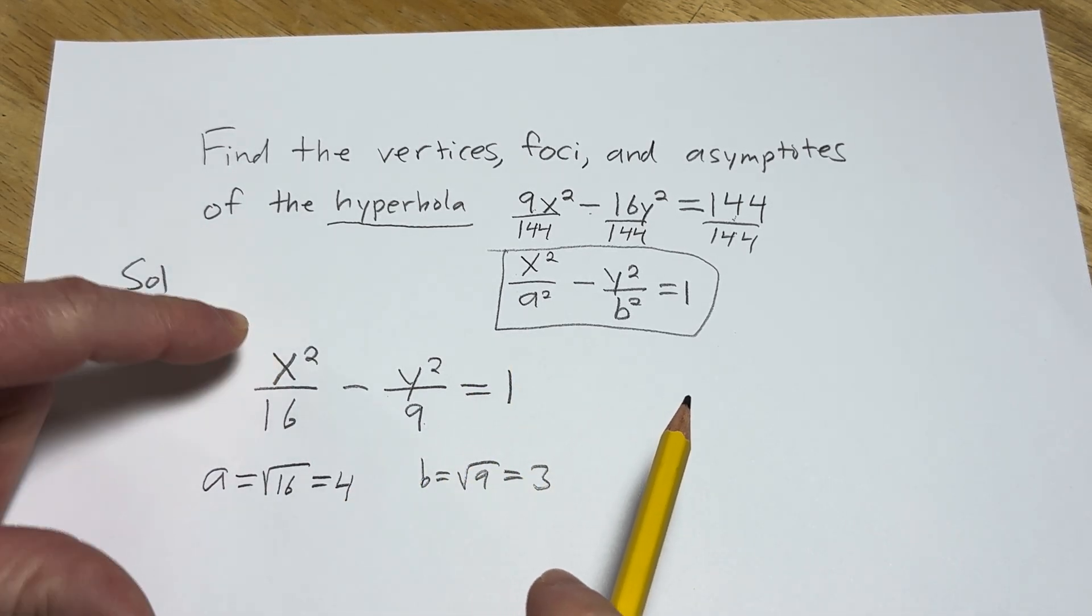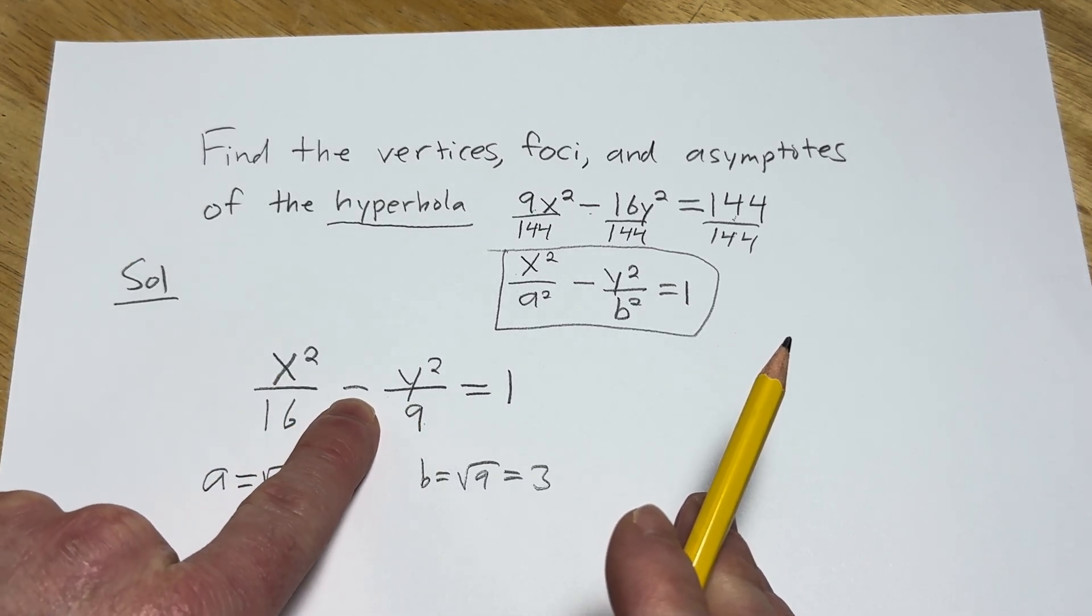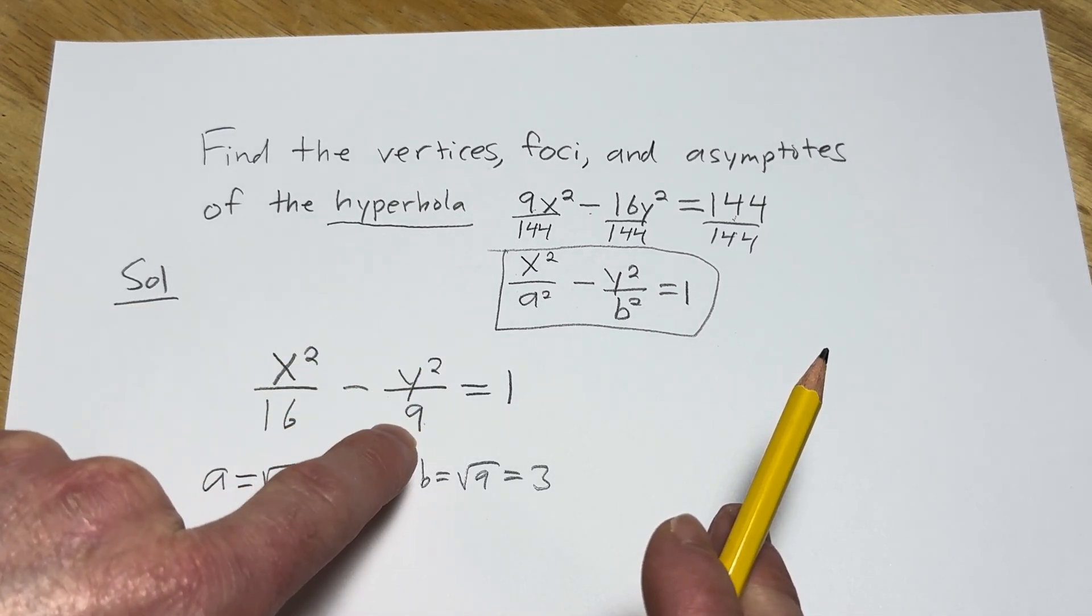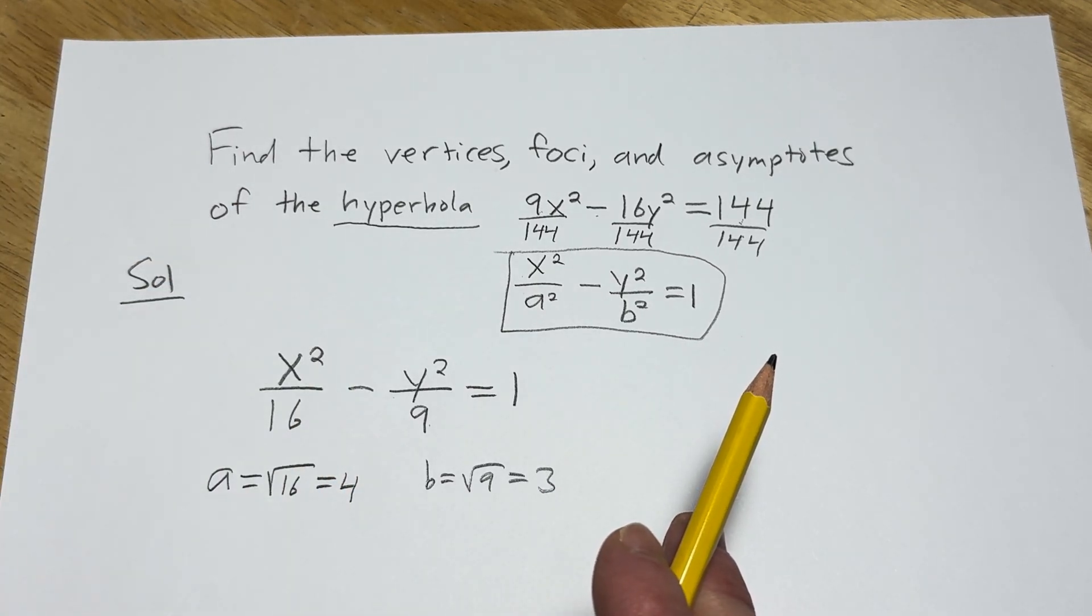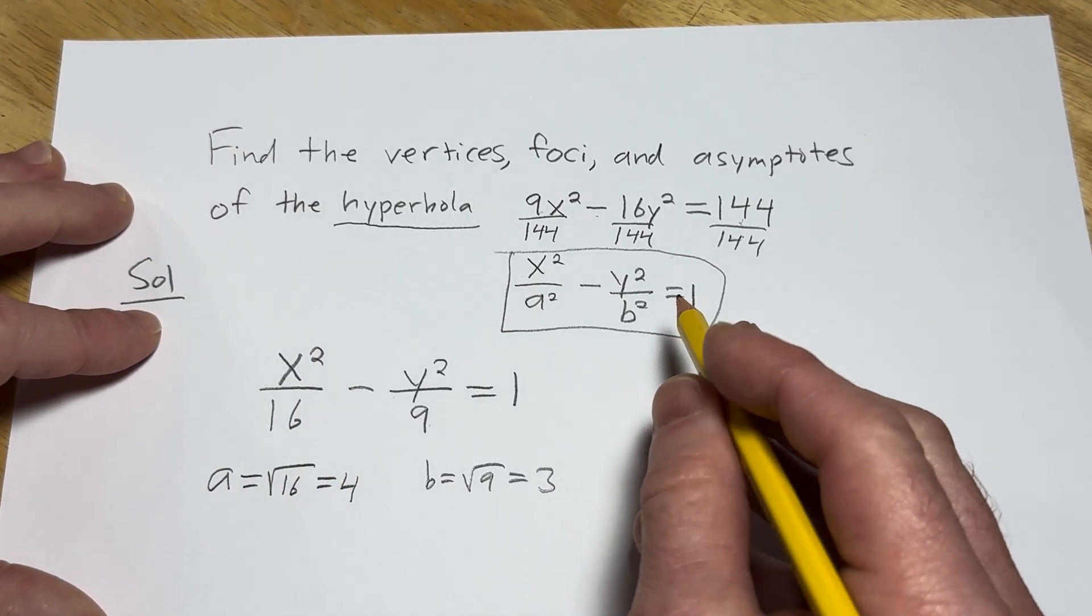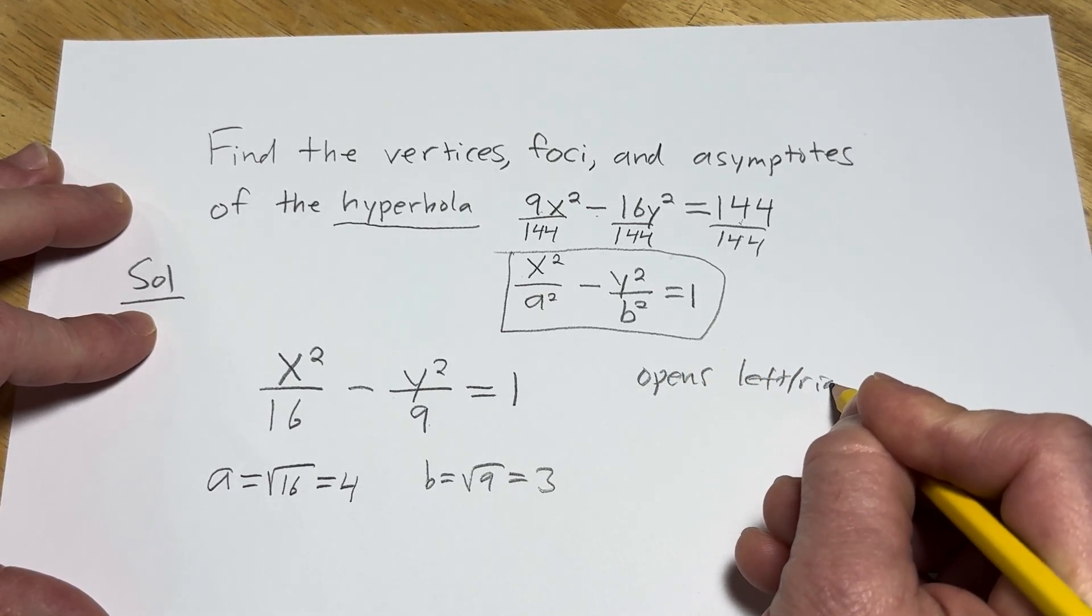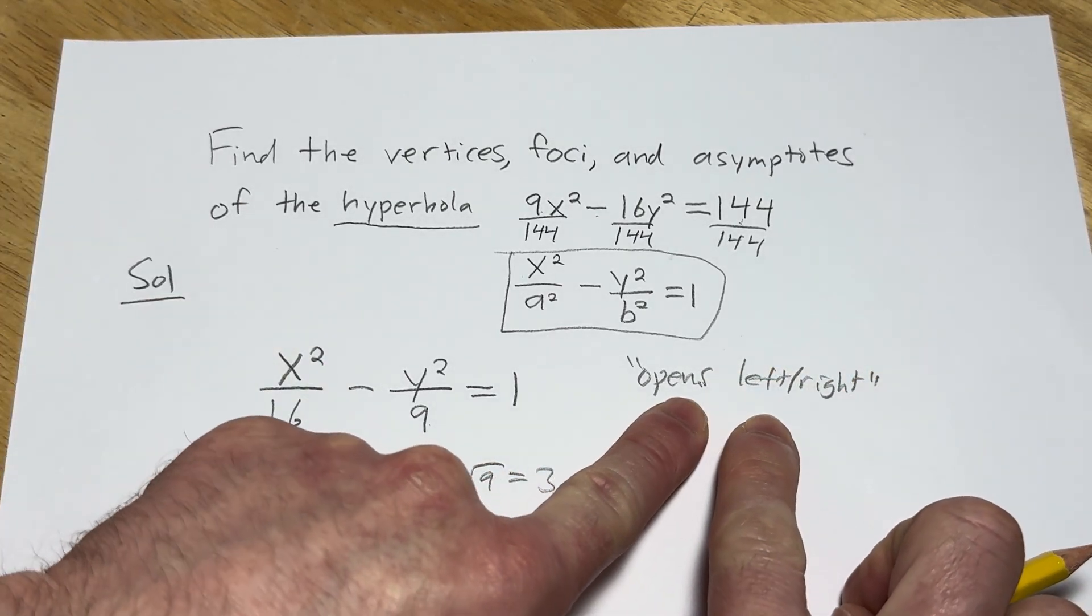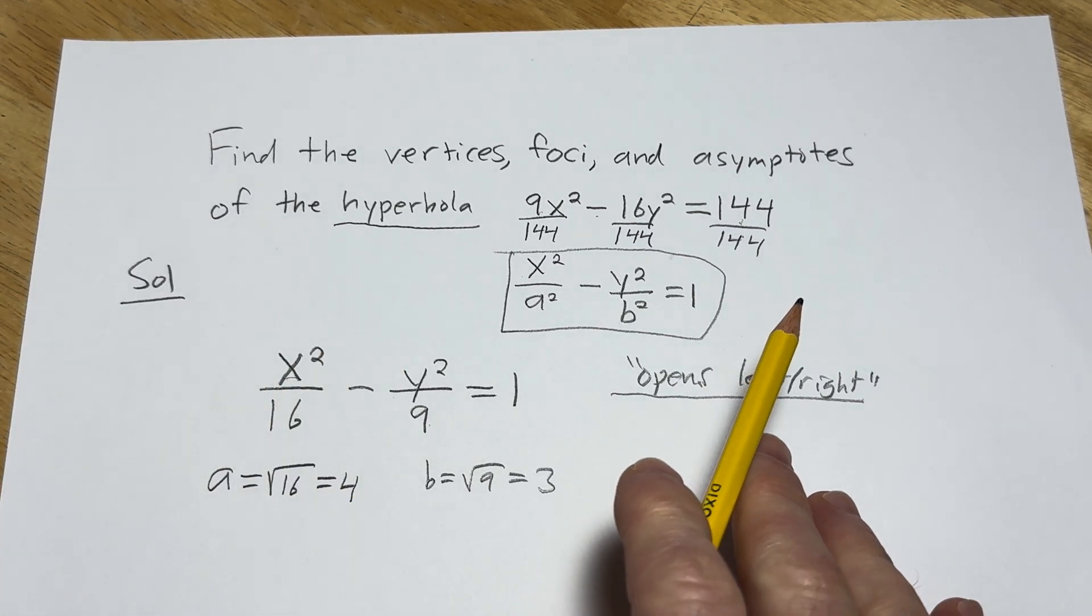Because the x comes first, the hyperbola opens left and right. If the y comes first, and there was like a minus here and an x, so if it was reversed, if it was y squared over 9 minus x squared over 16, then it would open up and down. x comes first, opens left and right. y comes first, opens up and down. So x comes first. It's going to open left and right. I actually write it down when I'm working it out because it's very important to know that when the x comes first, it opens left and right. That's how you know how to graph it.